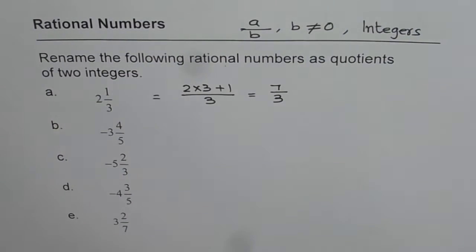So we get 7 over 3. That is how we can write them as quotients of two integers.